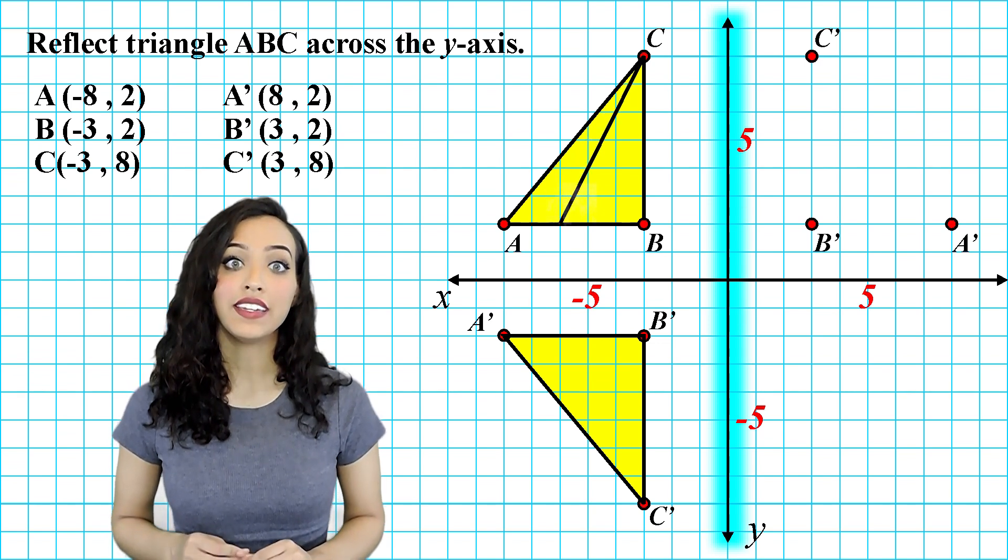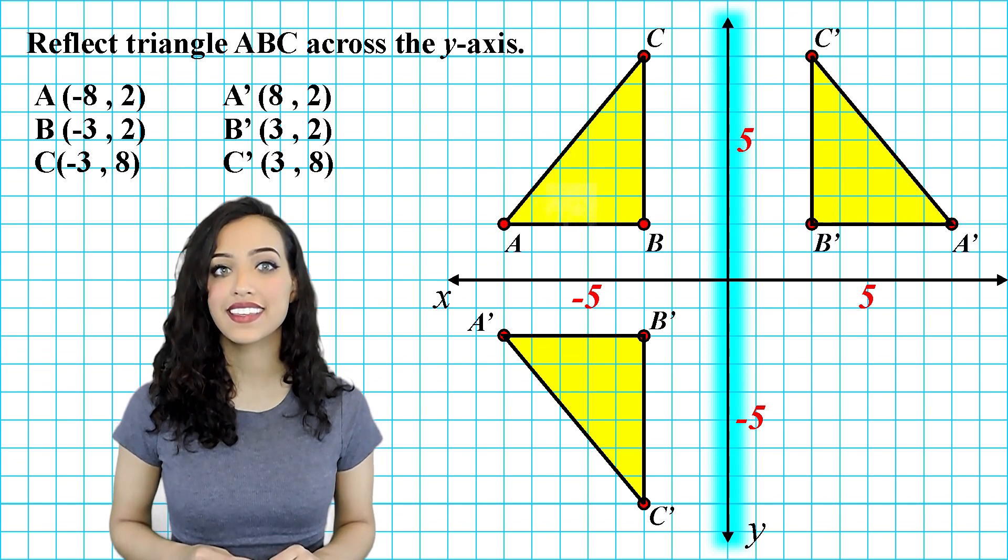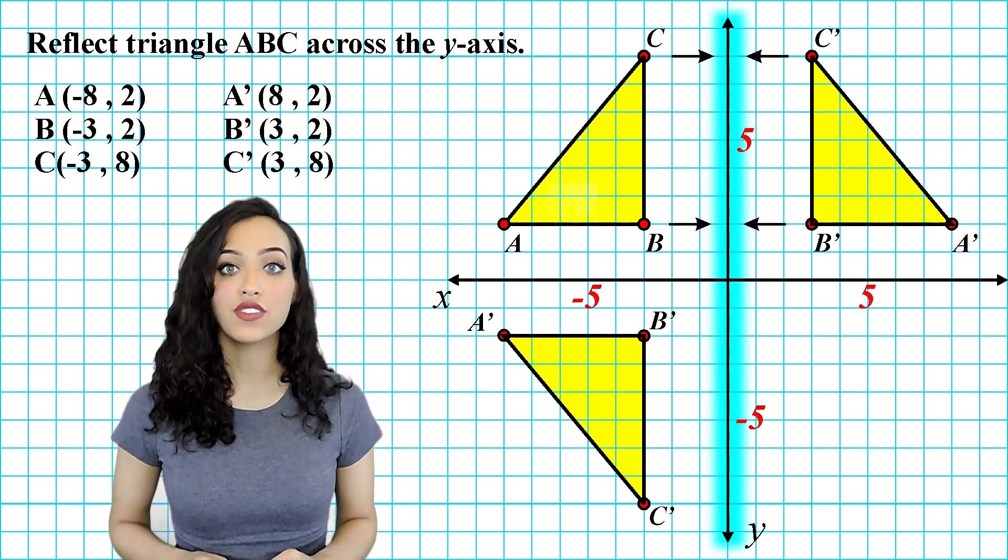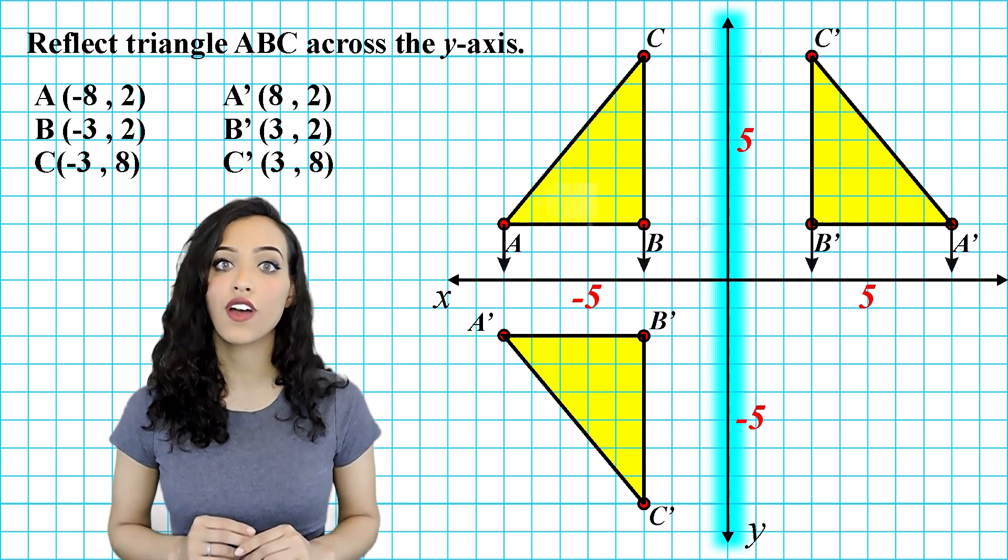Alright, now we have the location of our new points, we can reflect our triangle across the y axis. We can see that the y values of the reflected objects are exactly the same, but the x values are opposite.